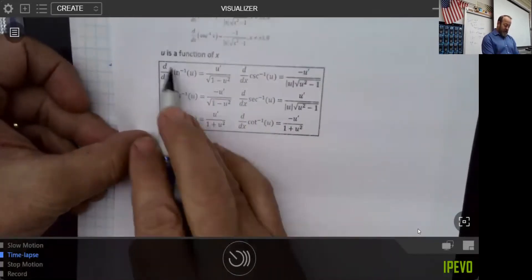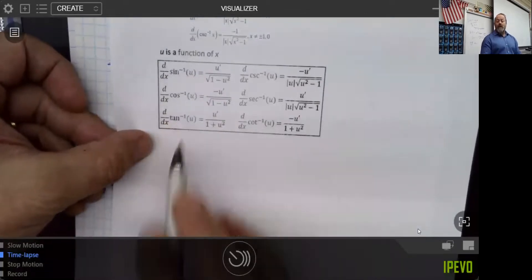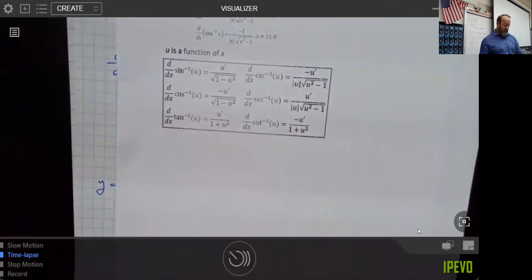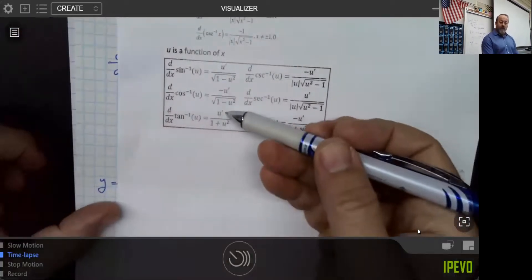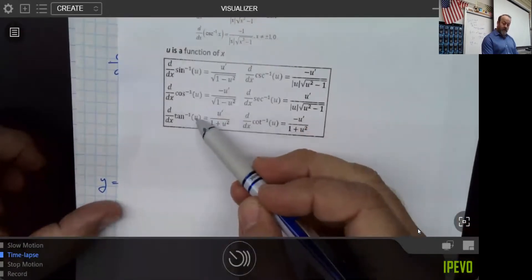A tangent inverse of any function of u. Keep in mind, this is a chain rule. u is a function of x. This is one of those that we're going to have on our cards to memorize, to help us facilitate that going faster. It is the derivative of the inside over 1 plus whatever that inside is squared.